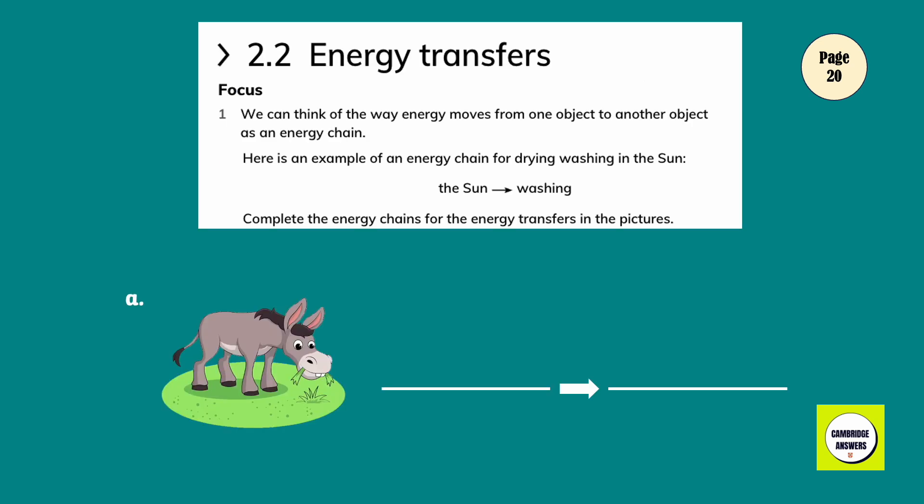Exercise 2.2 Energy Transfers. We can think of the way energy moves from one object to another object as an energy chain. Here is an example of an energy chain for drying washing in the sun: the sun to washing. Complete the energy chains for the energy transfers in the pictures.